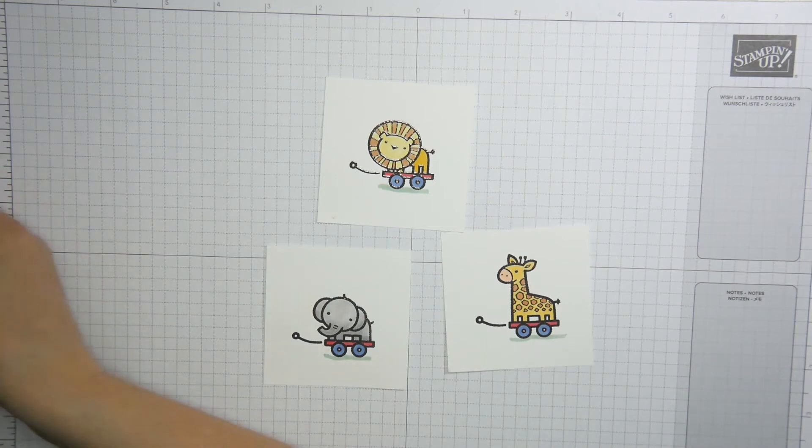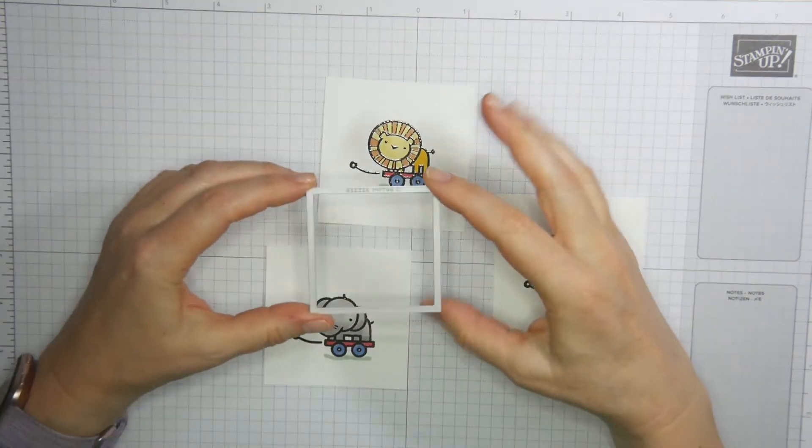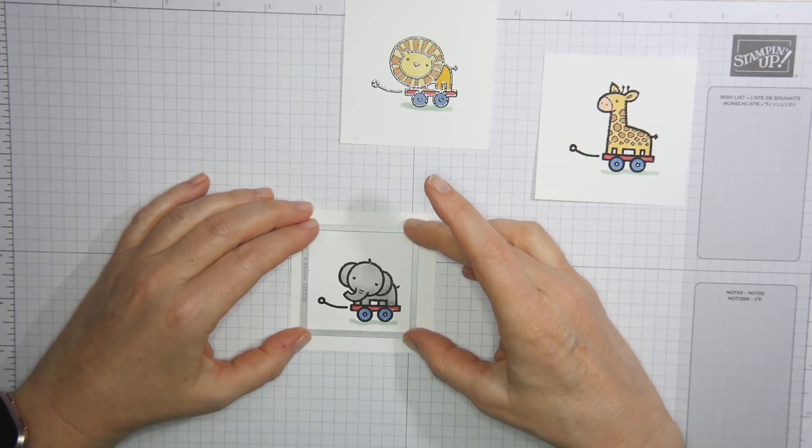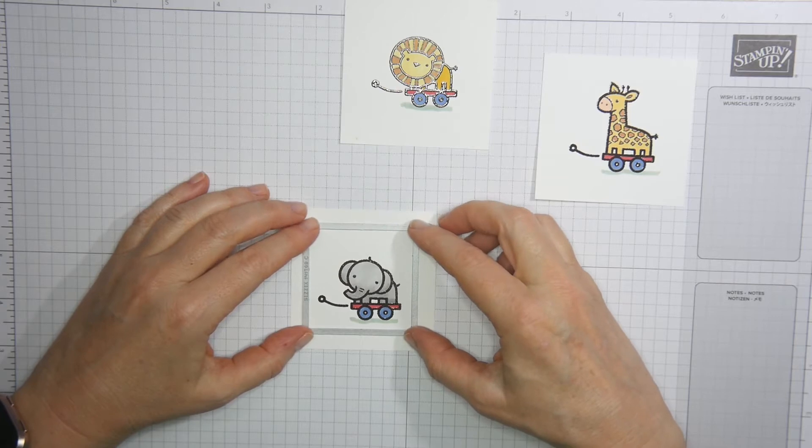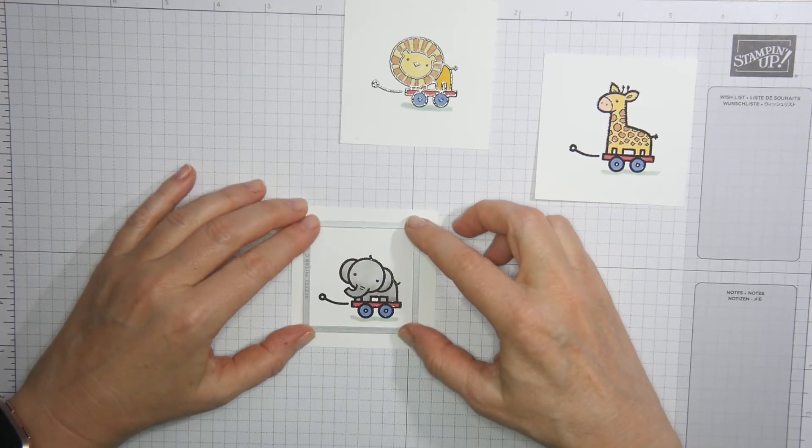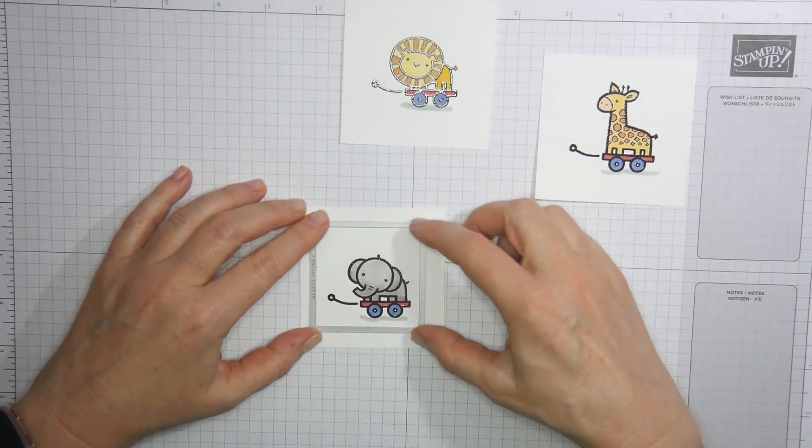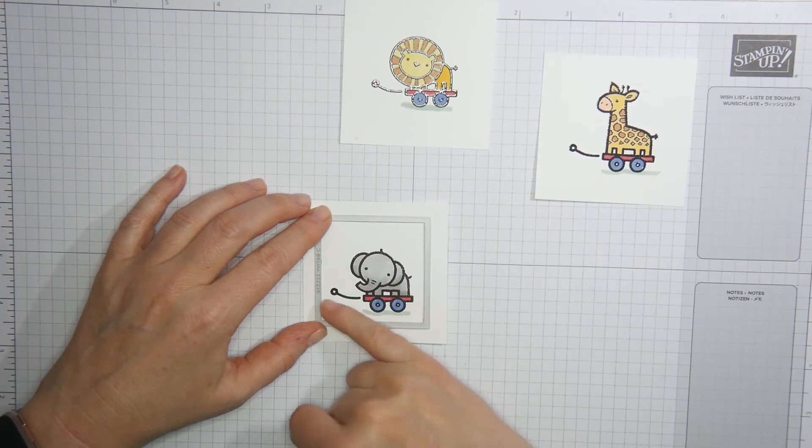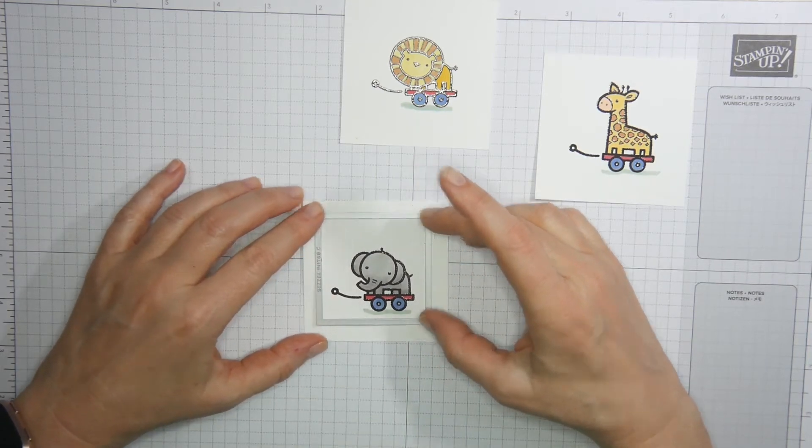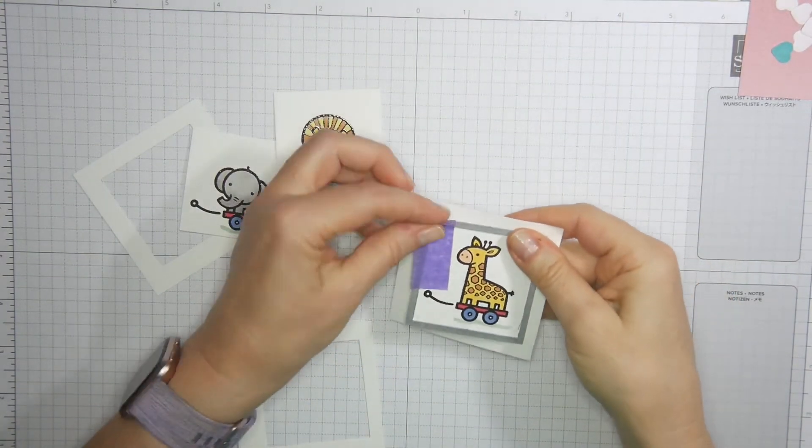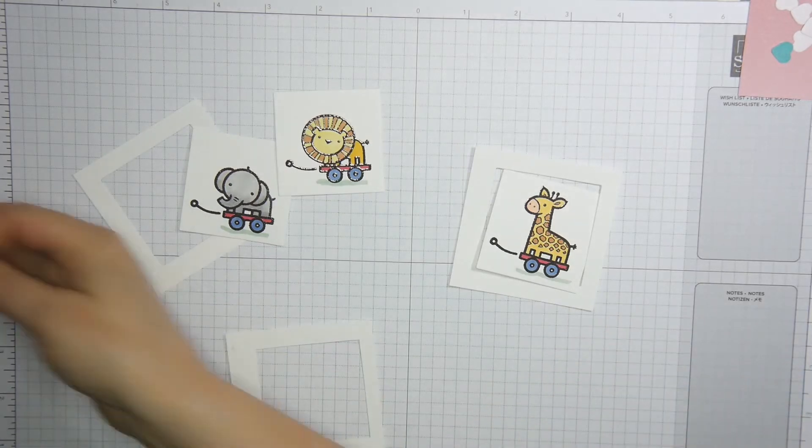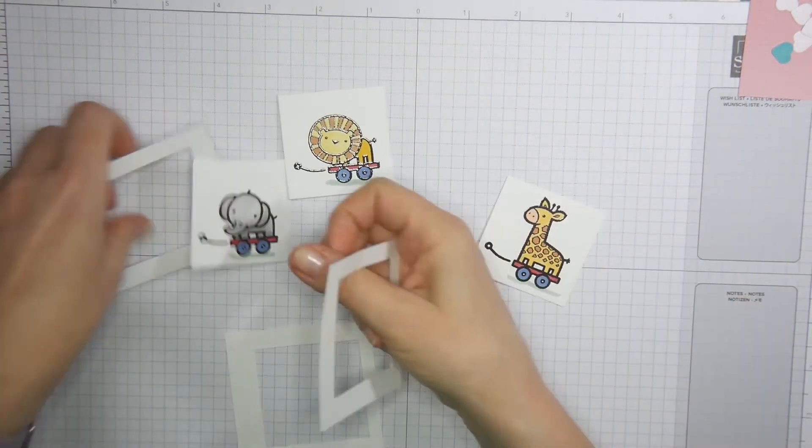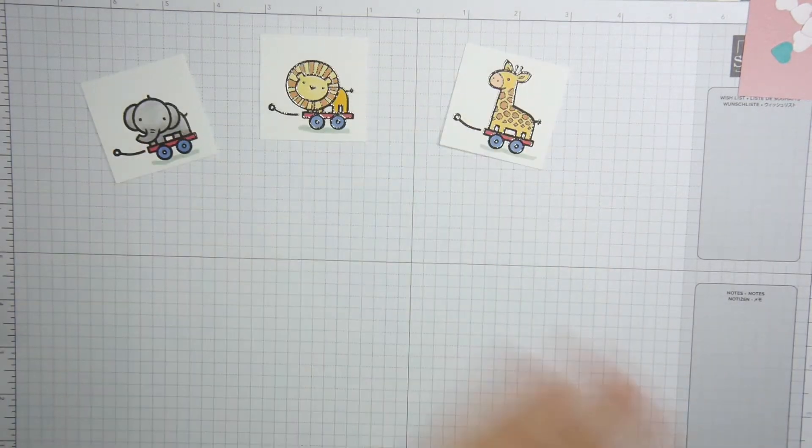Now you're going to die cut these with this size of the layering squares. I'll just check if they look right. I don't want them in the middle. I want them a bit towards the corner. So that space and that space is equal. I'm going to die cut these.